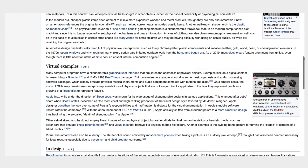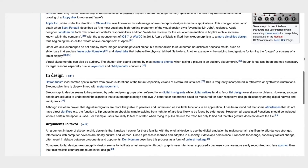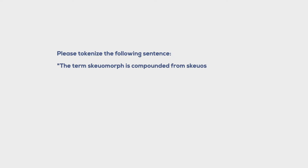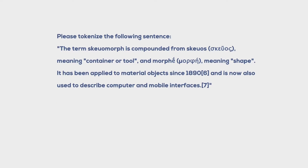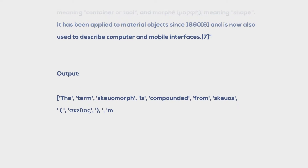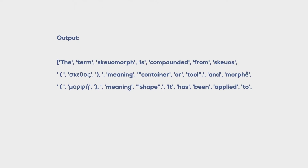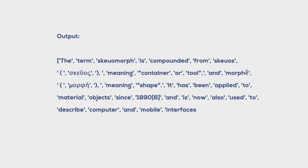I gave that to OpenAI's GPT-3 API as well. The sentence reads: the term 'skeuomorph' is compounded from 'skeuos', meaning container or tool. You can notice the Greek characters in that sentence with the accents up top, and 'morphe', meaning shape. It's even got a citation with square brackets. So it was a really complex sentence. And surprisingly, this is the output GPT-3 gave me. I was pretty shocked. It handled the Greek characters well, punctuation reasonably well. It didn't skip over stuff. One thing it didn't do is it didn't escape the single quotes in the sentence, but that's okay.